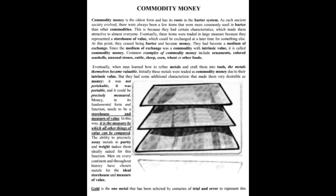The ability to precisely assess metals by purity and weight makes them ideally suited for this function. Men on every continent throughout history have chosen metals as the ideal storehouse and measure of value. Gold is one metal selected by centuries of trial and error to represent this. Now, they've purposely manipulated the value of different metals. If you look at the periodic table, you'll notice that silver comes before gold, which means silver is more valuable than gold because you need silver to make gold.